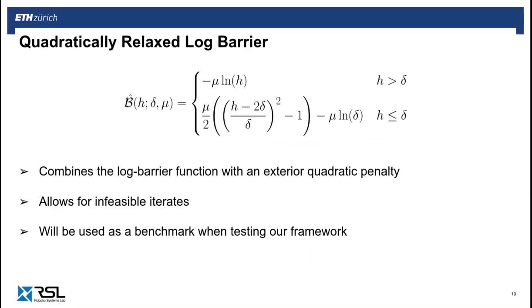Another function that could be used to enforce inequalities in the cost is the quadratically relaxed barrier. This combines a log barrier with an exterior quadratic penalty. Unlike the standard barrier function, it gets rid of the singularity at the boundary of the feasible region and allows for infeasible iterates to take place without any algorithmic failures. It is particularly interesting for us as it is used as a benchmark when testing our approach.